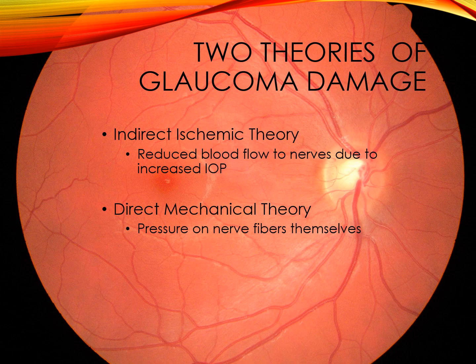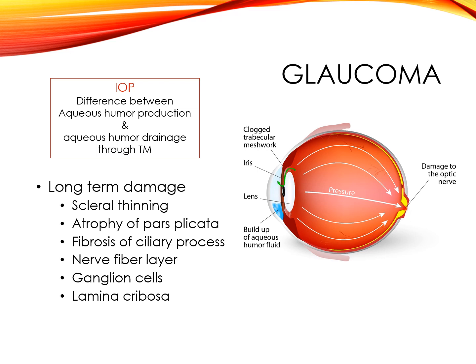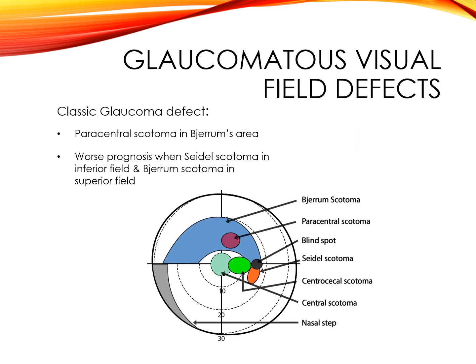The target IOP should be constantly reevaluated to ensure stability of the optic nerve and visual field, and to ultimately preserve the patient's visual functioning. Long-term glaucoma damage can cause scleral thinning, atrophy of the pars plana, fibrosis of the ciliary process, damage to the nerve fiber layer, the ganglion cells, and the lamina cribrosa. Because the nerve fiber layer fans out from the optic nerve in an arc-shaped pattern, the classic glaucomatous field defects are typically arc-shaped. If a patient has a Seidel scotoma in the inferior field and a Bjerrum scotoma in the superior field, they usually have a much worse prognosis.